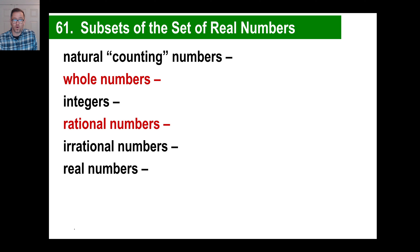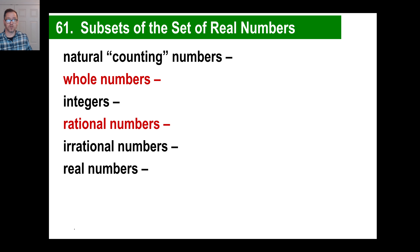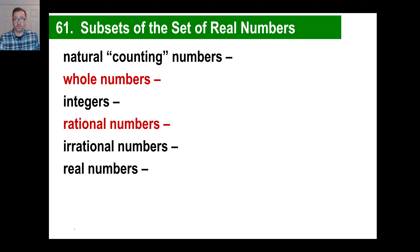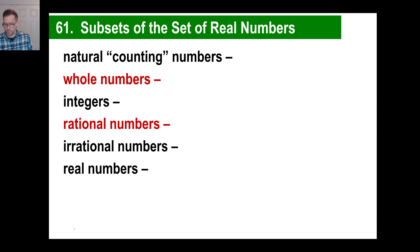Is 4 one of the natural counting numbers? Yes, obviously. Is it a whole number — 0, 1, 2, 3, 4, 5? Yes. Is it an integer? Yes. Is it a rational number — can you write 4 as a fraction? Yes: 4 over 1. Obviously it's not irrational. Is it a real number — is it on the number line? Yes, it is.